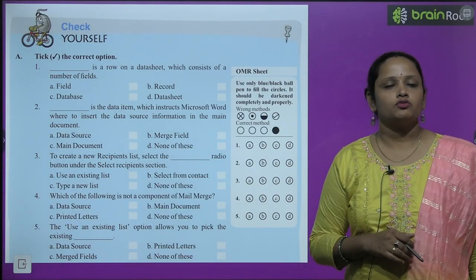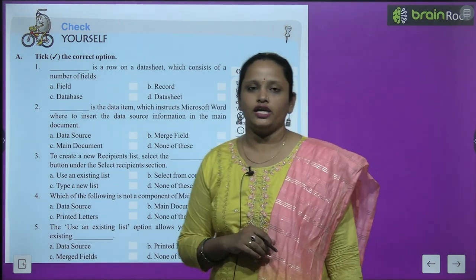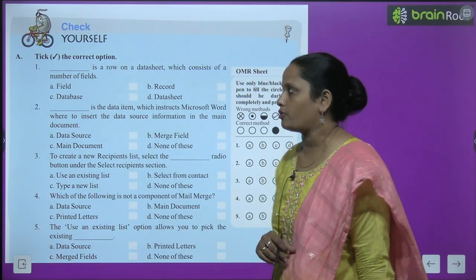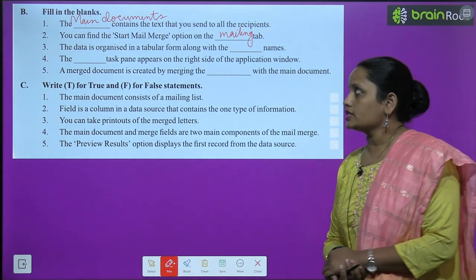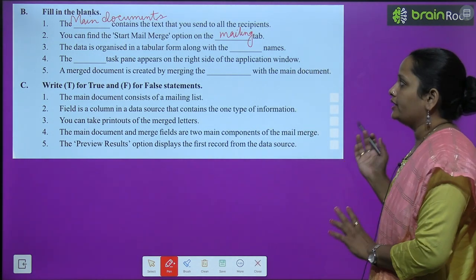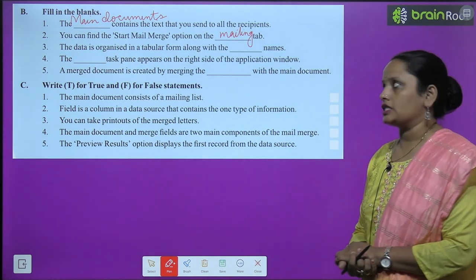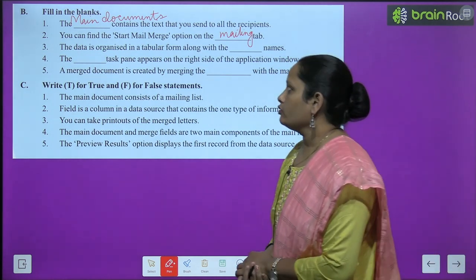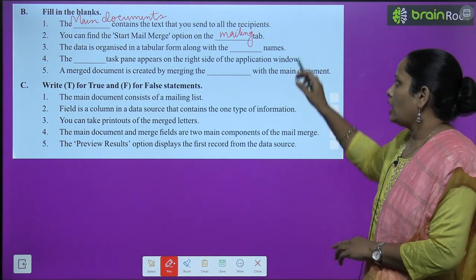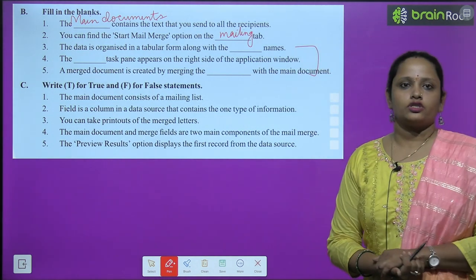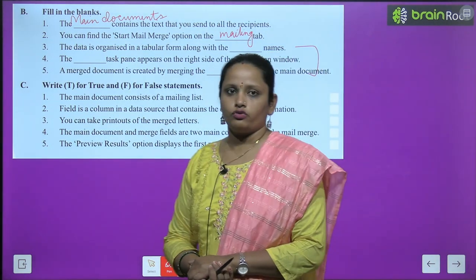Now let us move on to Check Yourself — your book exercises. Section A is Tick the Correct Option. Then Fill in the Blanks: the main document contains the text that you send to all the recipients, and you can find the Start Mail Merge option in the Mailings tab. Now let us move on to Write True or False.